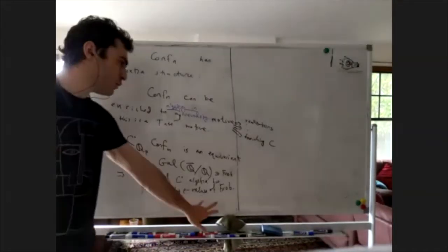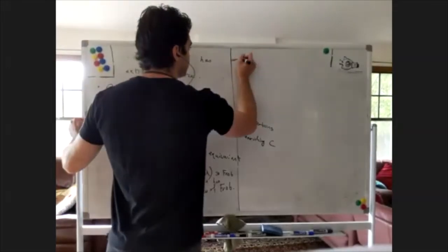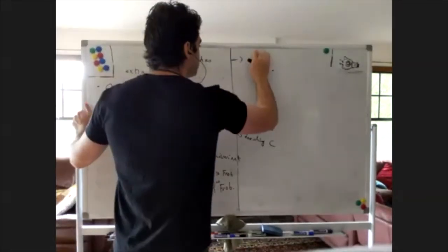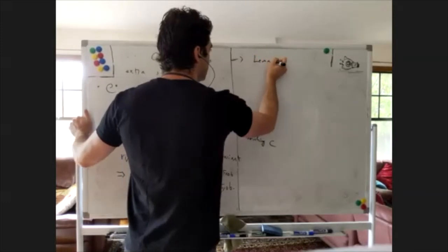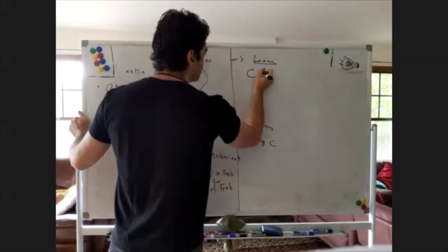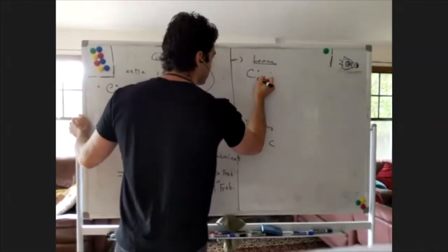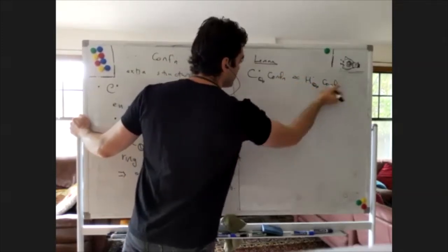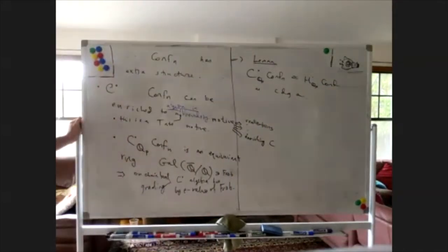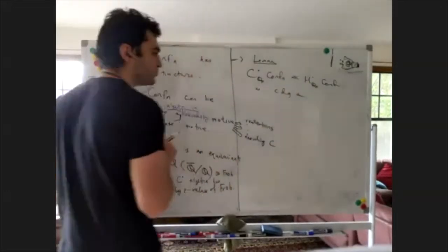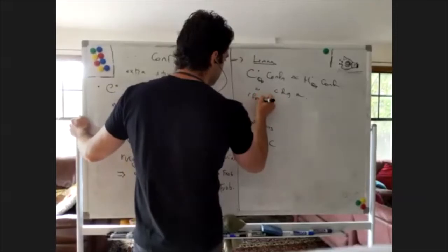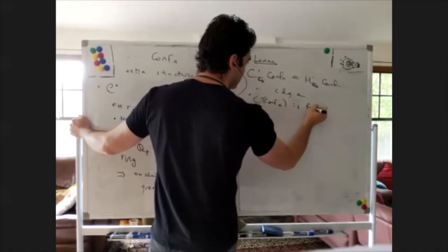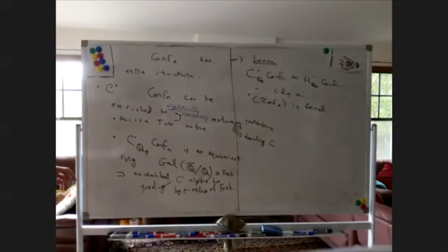This gives a dg commutative algebra with an additional grading, and this implies formality. Specifically, the following lemma: this algebra with Qp coefficients is isomorphic to the homology with the same coefficients of the configuration space as commutative dg algebras. There is a canonical sequence of quasi-isomorphisms relating these — this is known as formality.